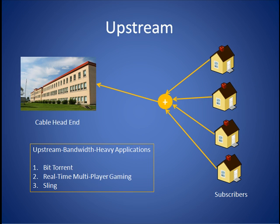More recently, however, new applications have begun to arise on the web that make significantly more demands on upstream bandwidth in the network. Three examples of such applications are BitTorrent, real-time multiplayer gaming, and Sling Media. Of these, we believe the BitTorrent application has the greatest potential to make disruptive demands on upstream bandwidth in today's network. As such, these applications can become a problem for the MSO, as their legacy networks have limited upstream bandwidth today.